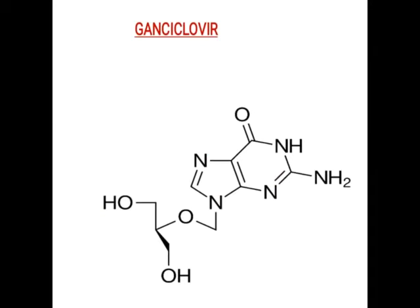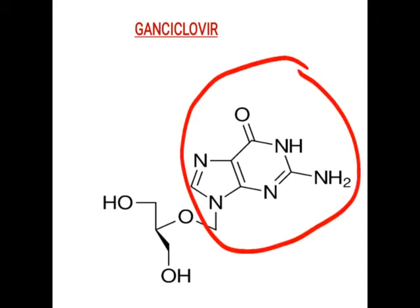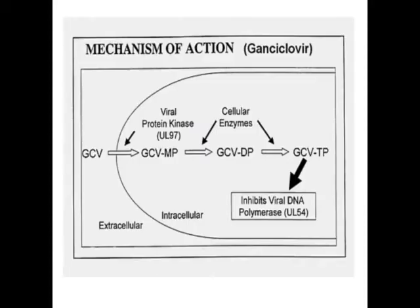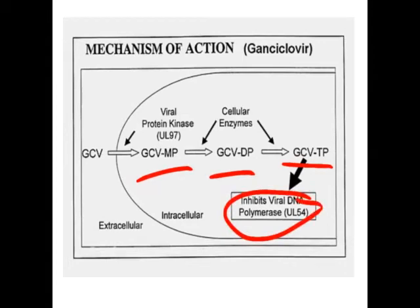The next drug is ganciclovir. Its structure is similar to guanine, but instead of the sugar moiety it consists of a dihydroxy group-containing moiety. In guanosine the sugar moiety is present, whereas ganciclovir has this dihydroxy group instead. When ganciclovir enters the cell, viral kinase converts it to monophosphate; cellular enzymes convert it to diphosphate and triphosphate. The triphosphate form enters DNA synthesis, causing DNA chain termination and inhibiting viral DNA polymerase.